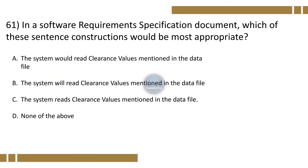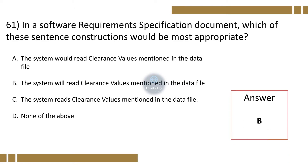Question 61. In a software requirement specification document, which of these sentence constructions would be most appropriate? Option A: The system would read clearance values mentioned in the data file. Option B: The system will read clearance values mentioned in the data file. Option C: The system reads clearance values mentioned in the data file. Option D: None of the above. The correct option is B.